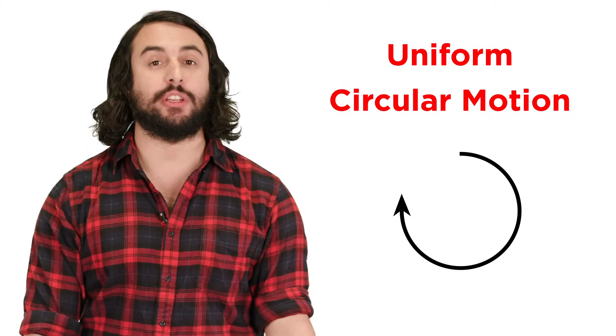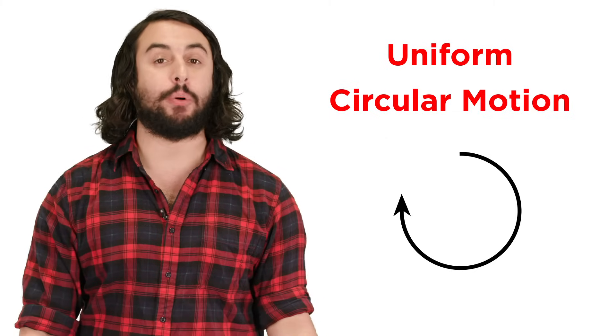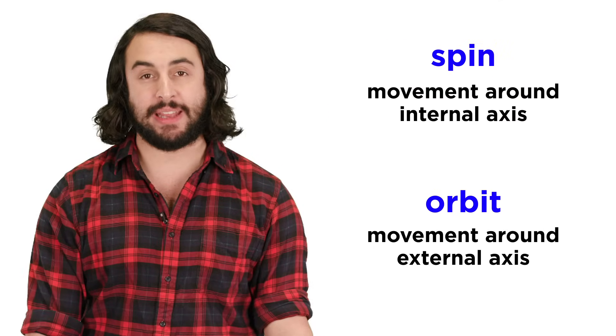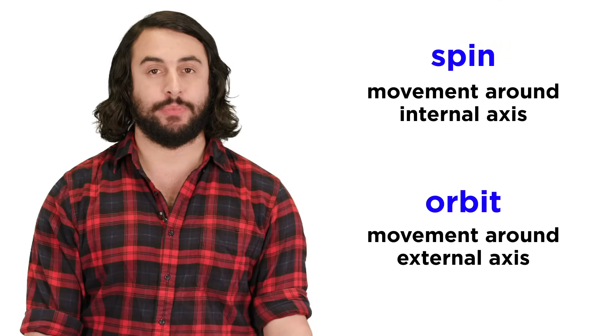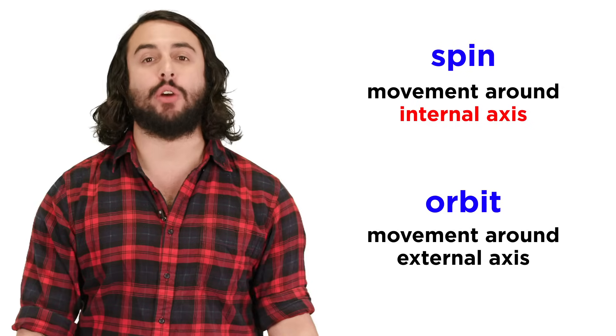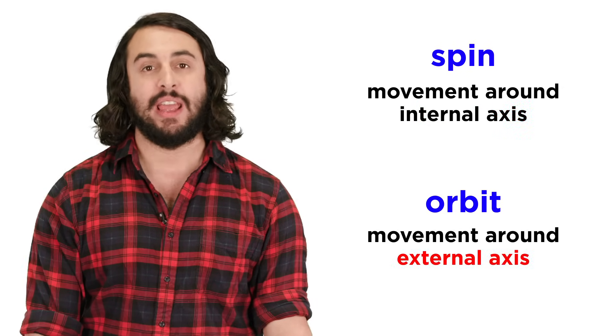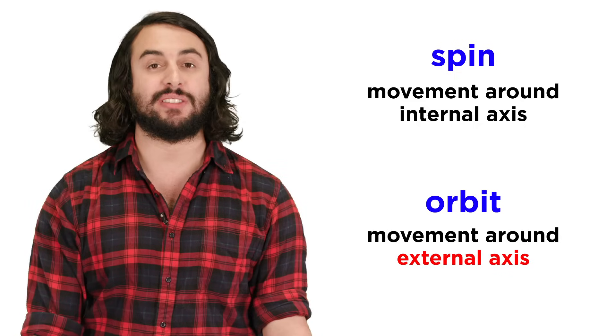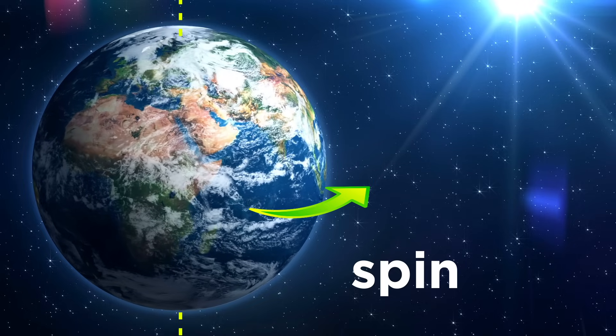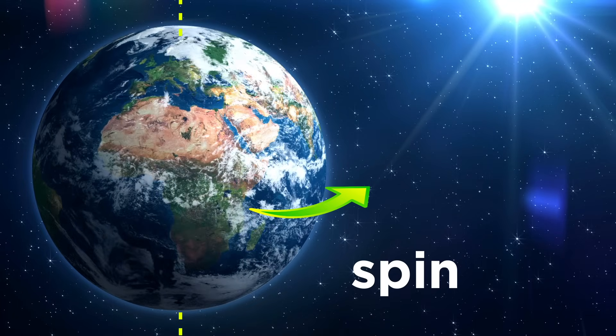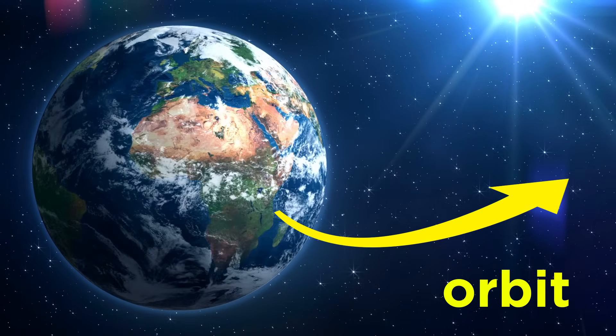We talked about uniform circular motion, but we need to make an important distinction between spin and orbital motion. An object can spin around an internal axis that goes through its center of mass, and it can also orbit around some external axis. This means that the earth will spin on its axis, but it orbits around the Sun.